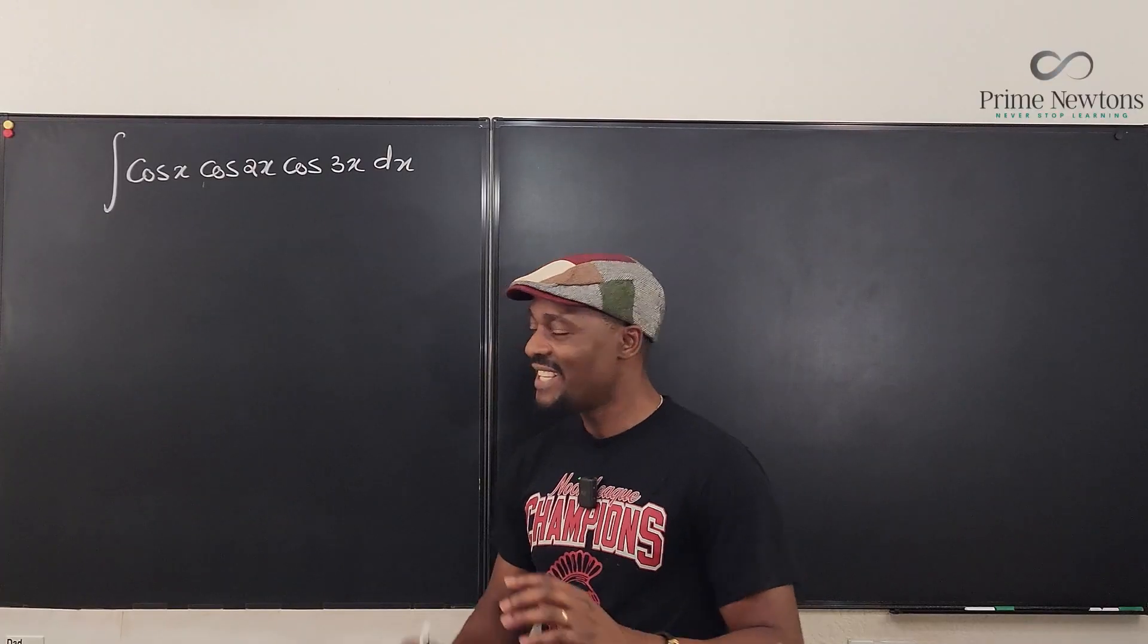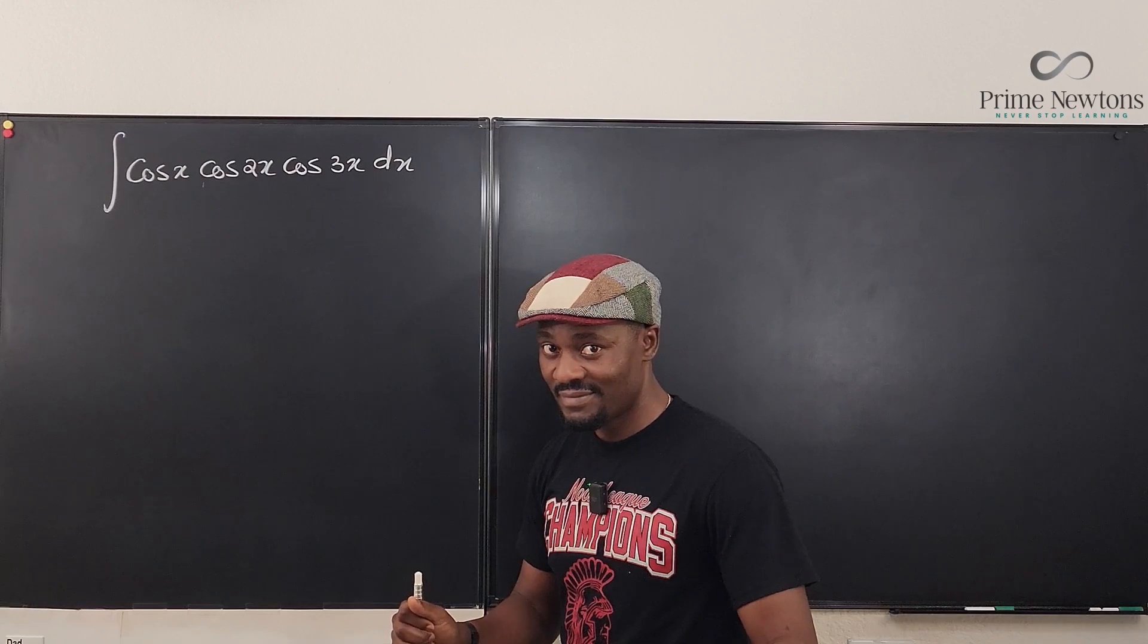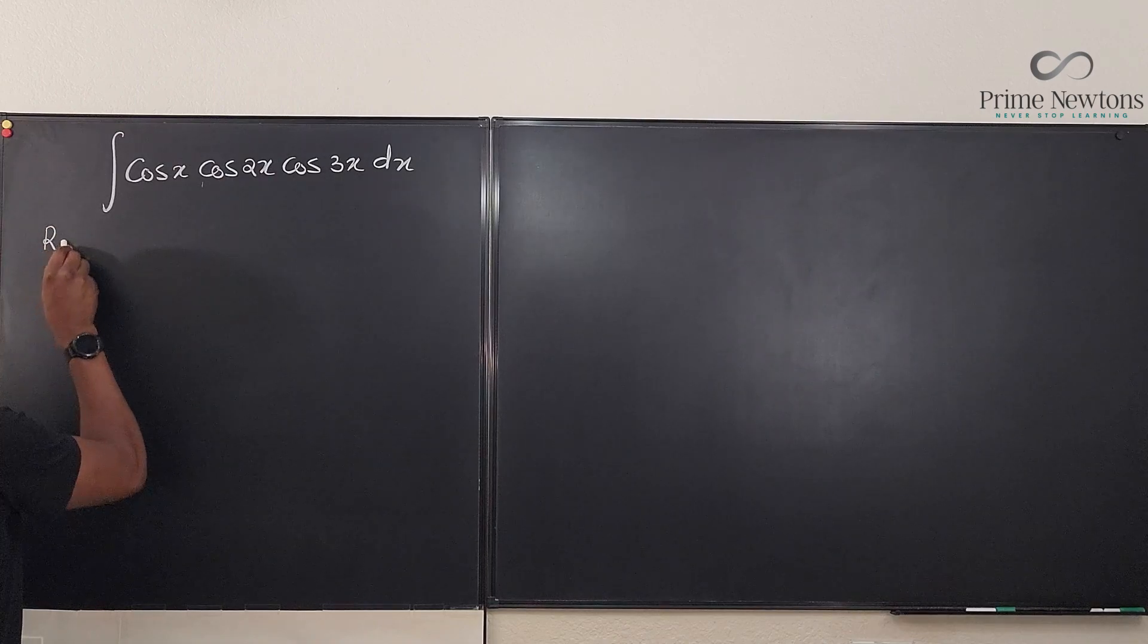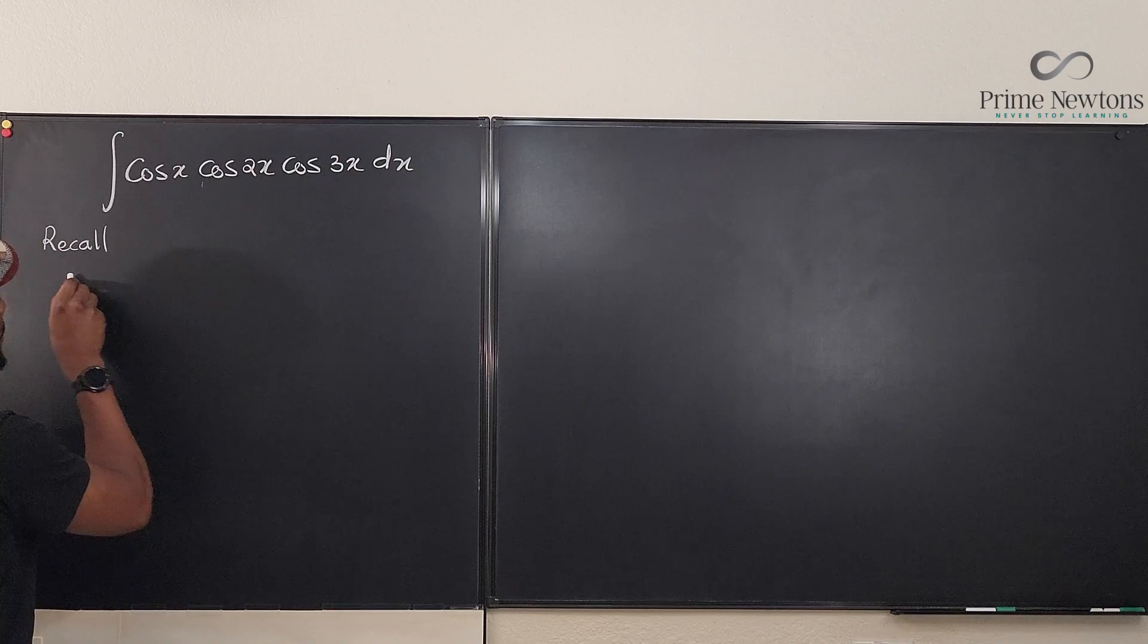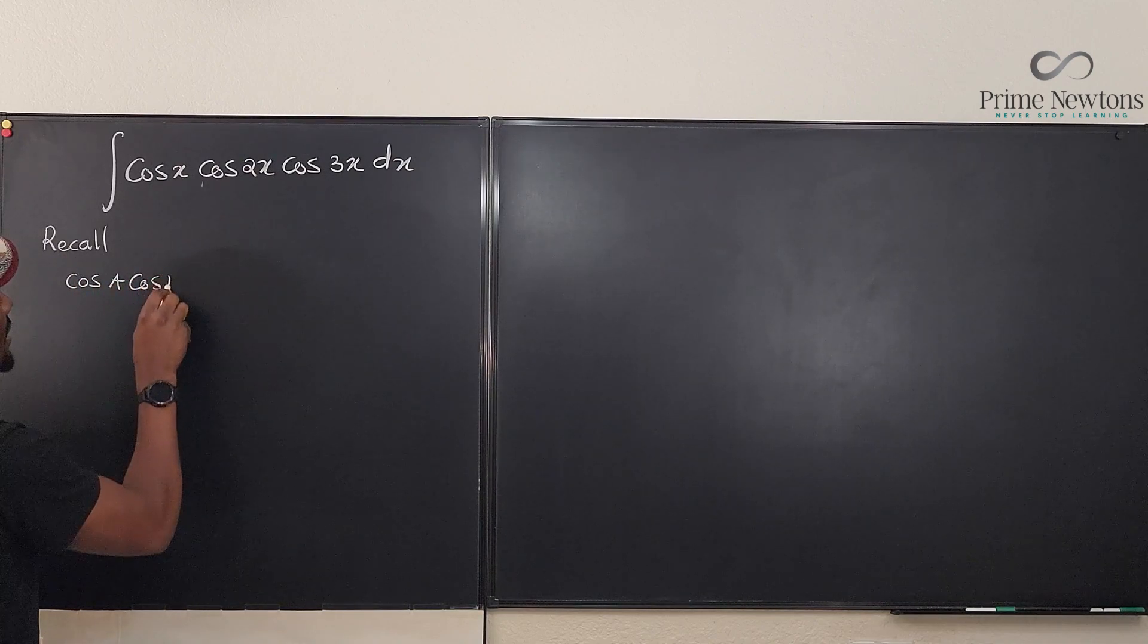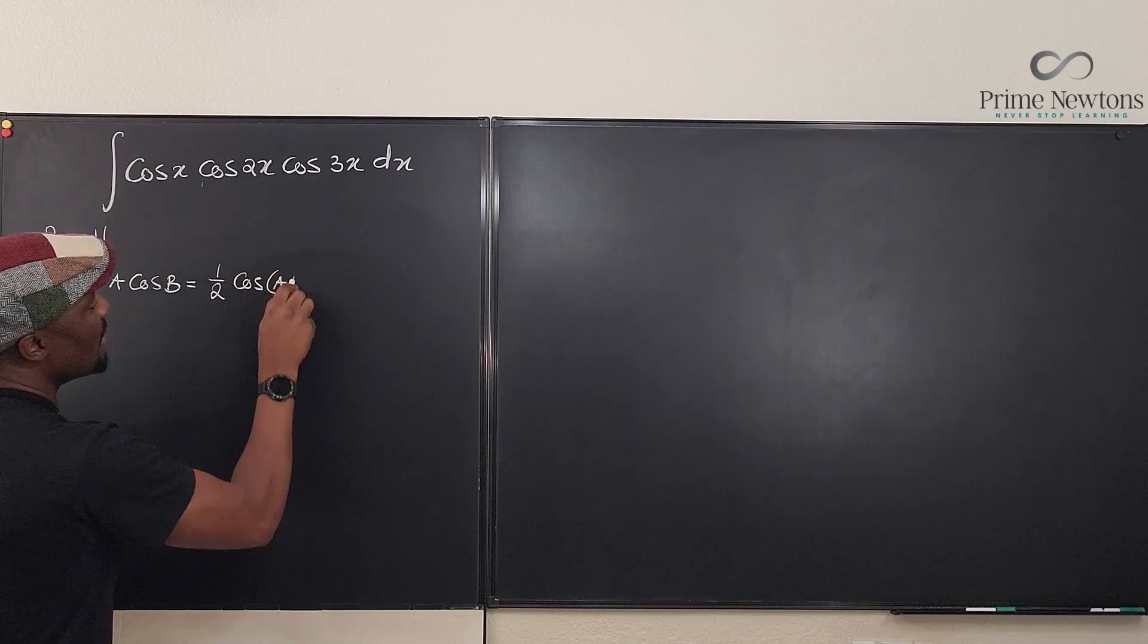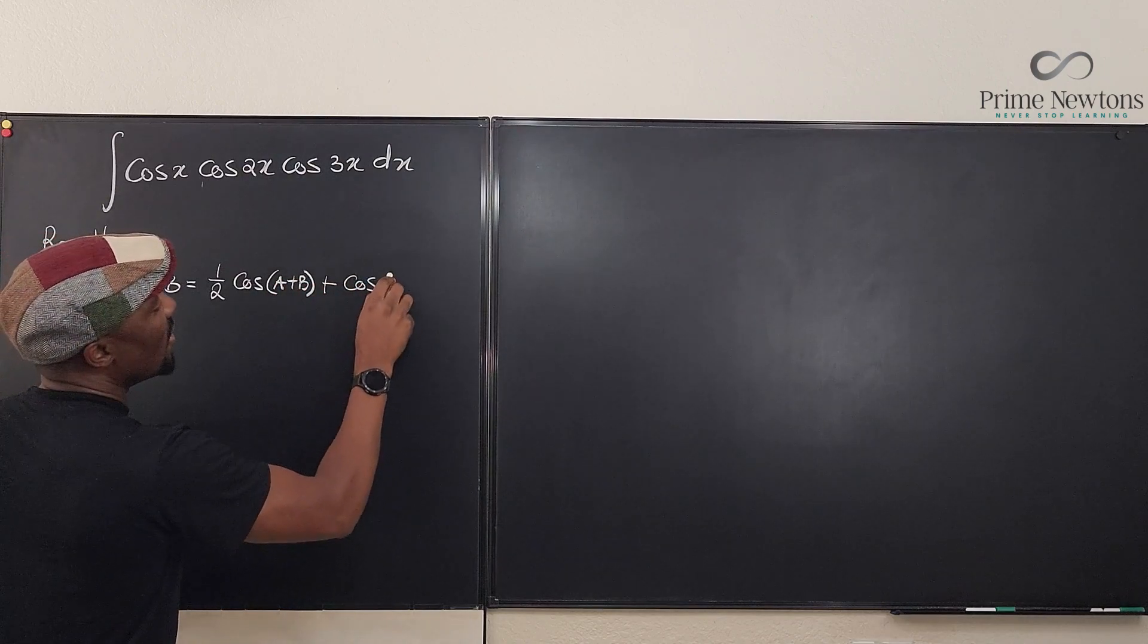What you need is the identity that converts a product into a sum. And what is that? It is basically this. Recall this. That if you have the cosine of A times the cosine of B, it is basically one half of the cosine of the sum plus the cosine of the difference.